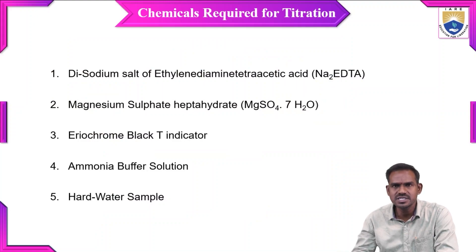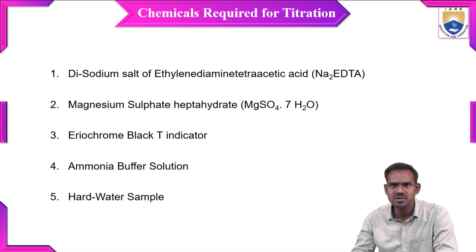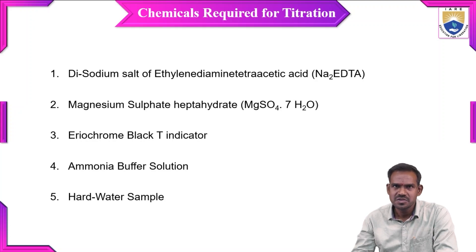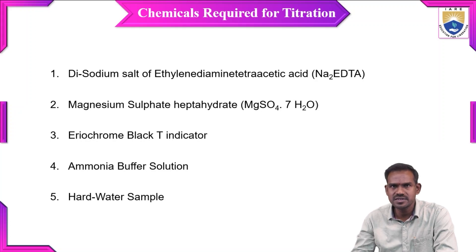The chemicals required for this titration — there are five. First is disodium salt of EDTA, simply formulated as Na2EDTA. Second is magnesium sulfate heptahydrate, MgSO4·7H2O, commercially called Epsom salt. We use this salt for the preparation of standard hard water sample. We take a fixed amount of Epsom salt and add distilled water — not tap water, because tap water already contains calcium and magnesium ions.